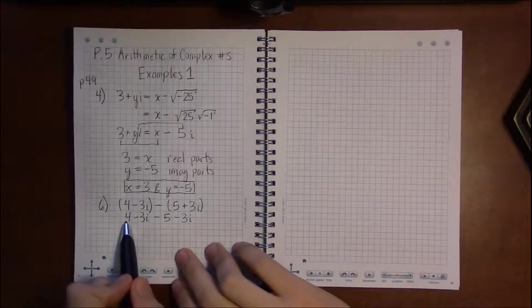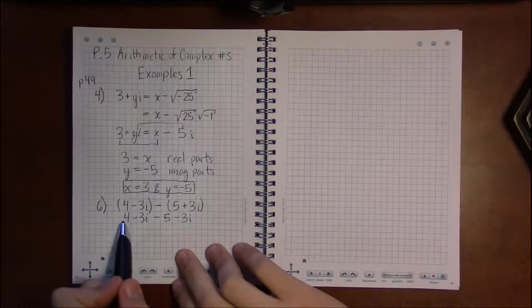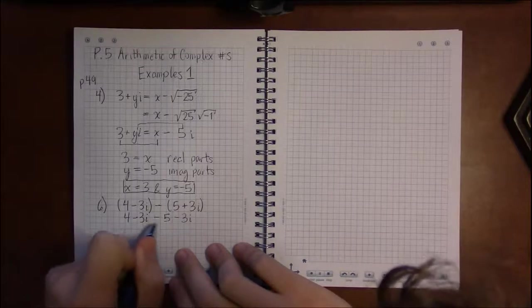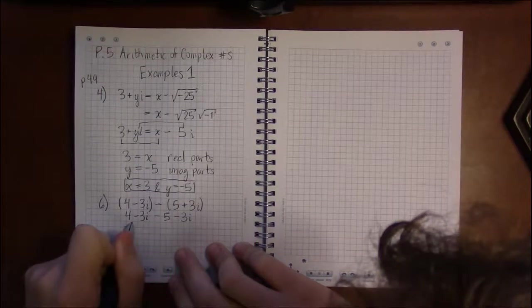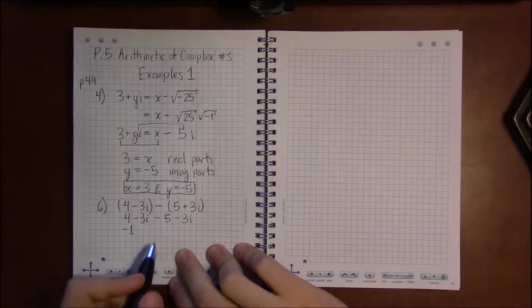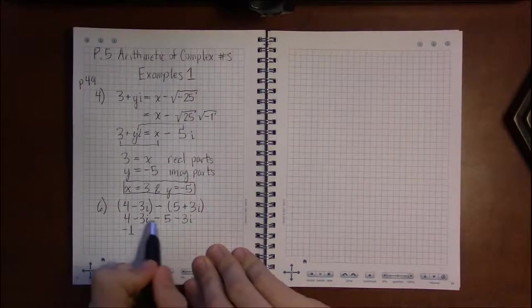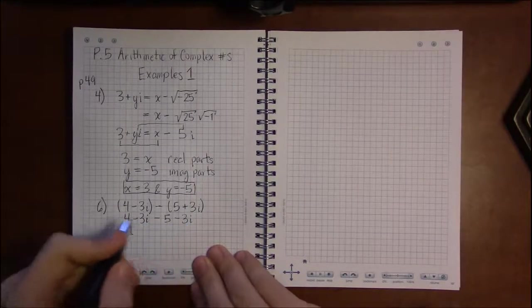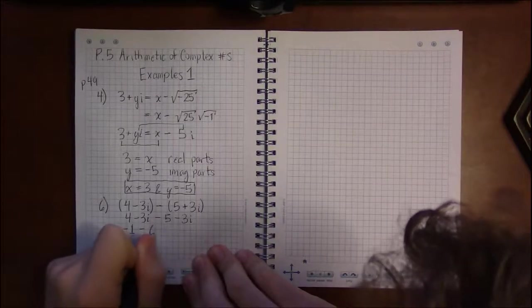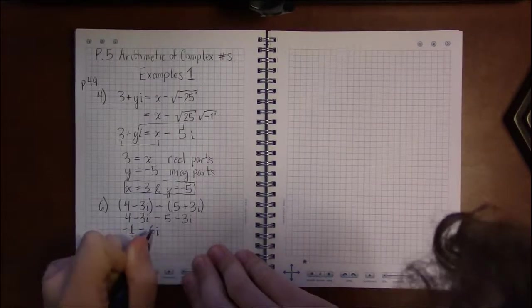And now I combine like terms. The real parts are like terms—the 4 and the minus 5—so 4 minus 5 becomes minus 1. And the imaginary parts, minus 3i minus 3i, are like terms and they combine to be minus 6i. That's it, that's all there is to six.